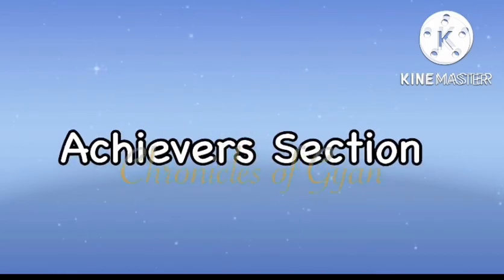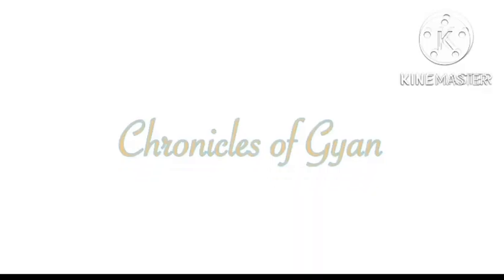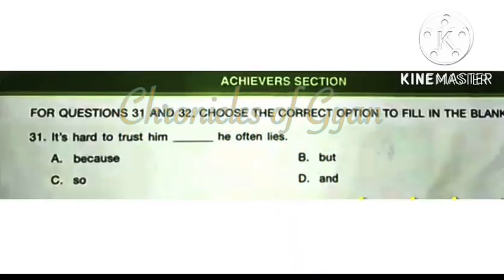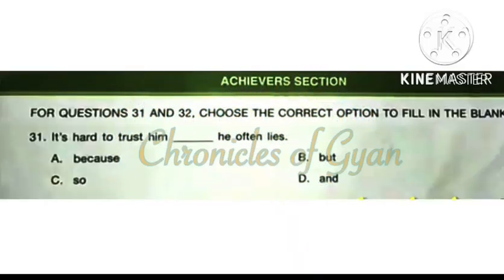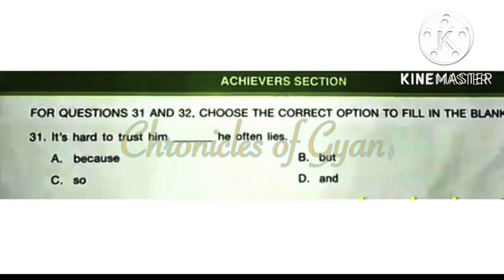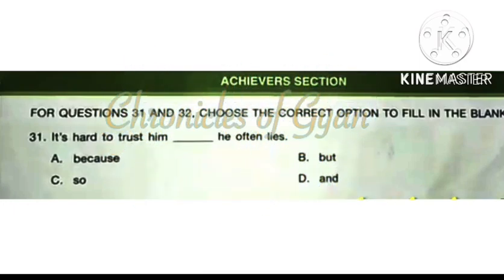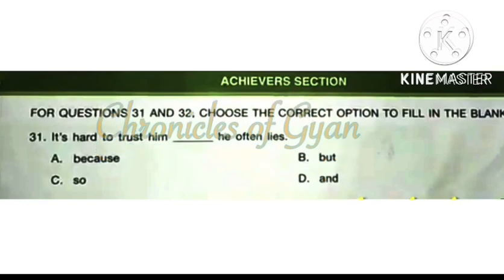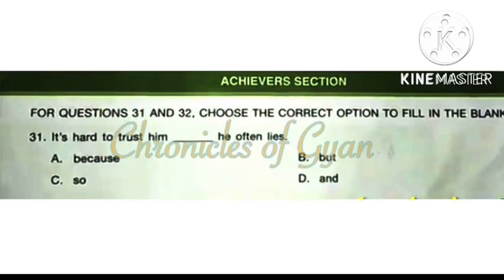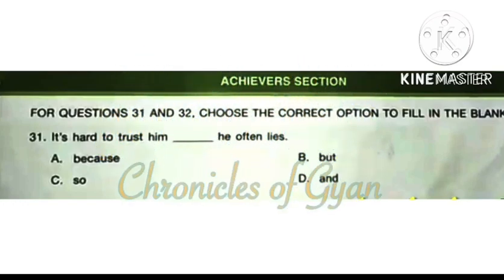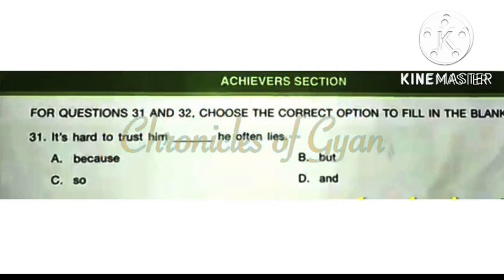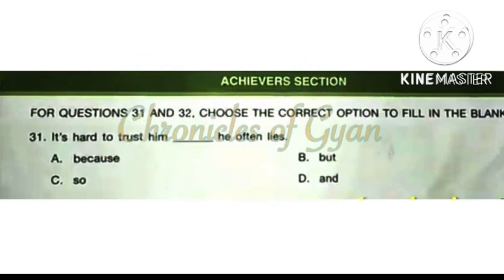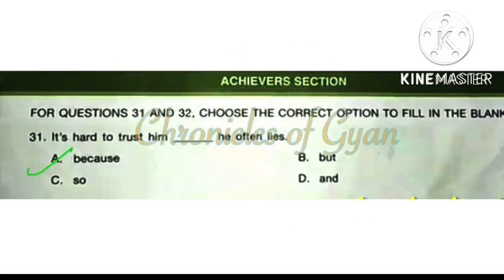The last section is the Achievers section. For questions 31 and 32, choose the correct option to fill in the blank. Question 31: It's hard to trust him, dash he often lies. The correct answer is option A: Because. It's hard to trust him because he often lies.